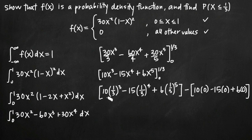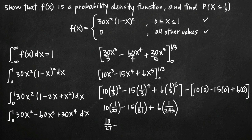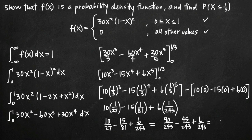We simplify to get our final answer. When we reduce the fraction by dividing both numerator and denominator by 3, our final answer is 17 over 81. That's the probability that x is less than or equal to 1/3.